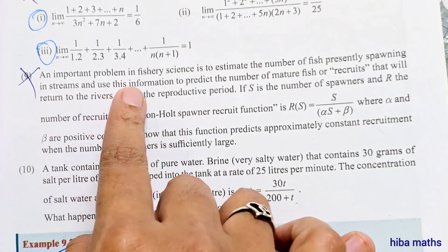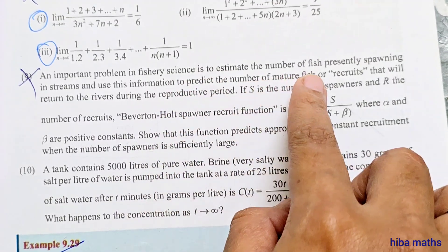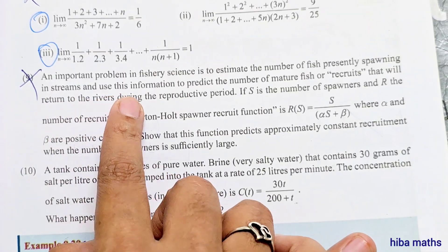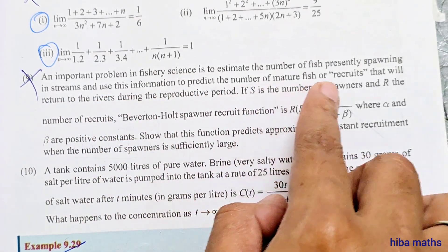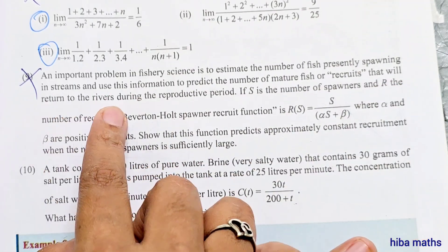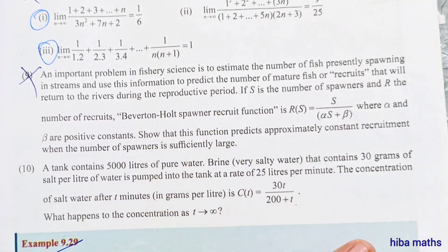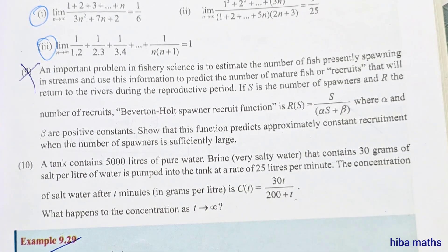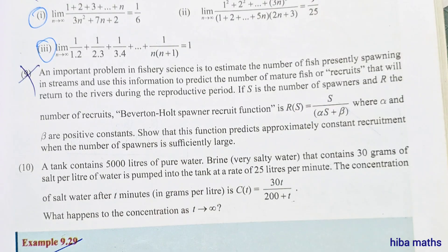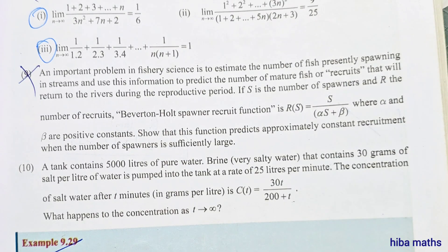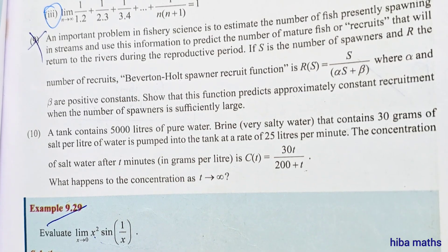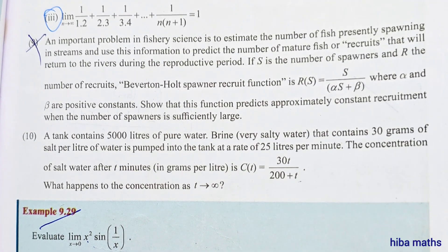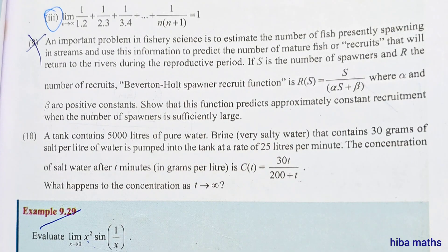An important problem in fishery science is to estimate the number of fish presently in streams and use this information to predict the number of mature fish or recruits that will return to the river during the reproductive period. If s is the number of spawners and r the number of recruits, the spawner-recruit function is r(s) = s divided by alpha times (s plus beta), where alpha and beta are positive constants.